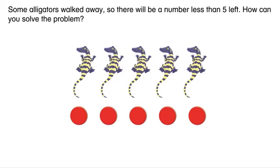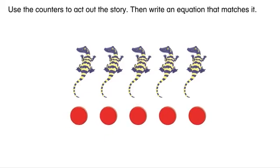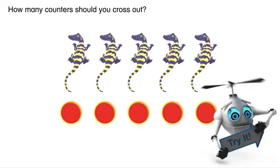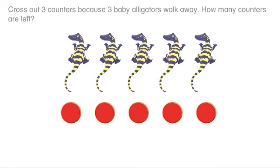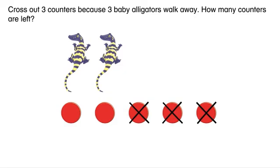How can you solve the problem? Use the counters to act out the story. Then write an equation that matches it. How many counters should you cross out? Cross out three counters because three baby alligators walk away.